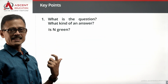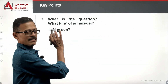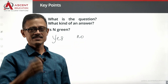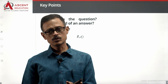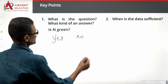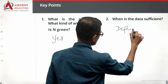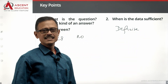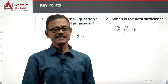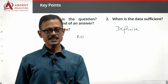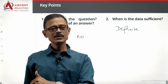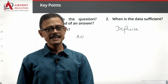Take a relook at the question: Is N green? This is a yes-or-no question, so the answer will be yes or no. The data is sufficient when we are able to come up with a definite yes or a definite no. If N is definitely green — data is sufficient. If N is definitely not green — data is sufficient. But if we cannot determine either way, the data is not sufficient.